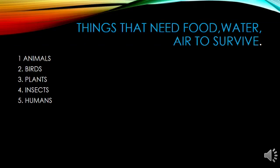First one: animals. They need food and water. Birds — even they die without water. Plants — you all have plants at home. If you do not water your plants for five days, imagine, they will die. Insects also die. You might have seen dead ants, spiders, and lizards at home. They also need air, water, and food to survive. We humans — yes, we all need air, water, and food. We can't live without these things. So these things need food, air, and water to survive.